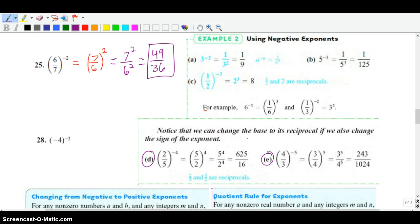One more. We've got to take care of this negative exponent. So the reciprocal of negative 4 is negative 1 fourth to the 3rd power. So now you're going to square this. It doesn't matter where the negative goes. I typically like to keep it up top. So it's going to be negative 1 cubed over 4 cubed. Negative 1 cubed is still just negative 1, 4 cubed is 64. So that's the difference between 28 and I think it was 21 up above. You can kind of see the difference.